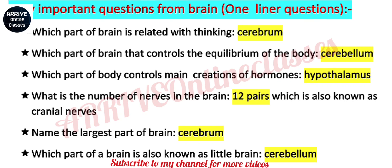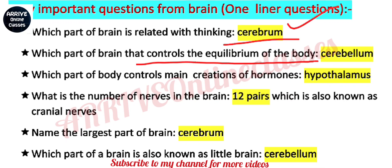First question: which part of brain is related with thinking? The answer is cerebrum, and cerebrum is a part of forebrain. Second question: which part of brain controls the equilibrium of the body? This is the cerebellum.